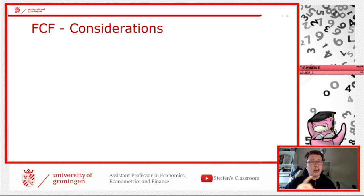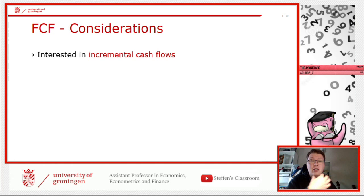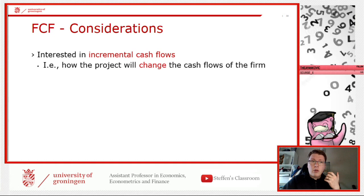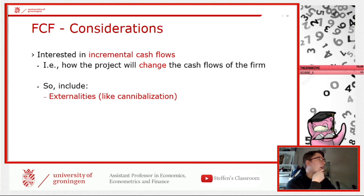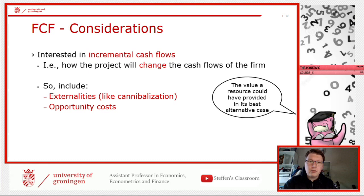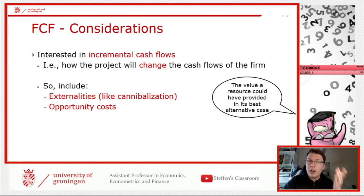There are important caveats when calculating free cash flows. We are only interested in the incremental cash flow — the additional cash flow from this specific project. That means we must include externalities such as cannibalization: if a new project damages sales of an existing product, that loss must be included. We also have to include opportunity cost — the value a resource could have provided in its best alternative use.